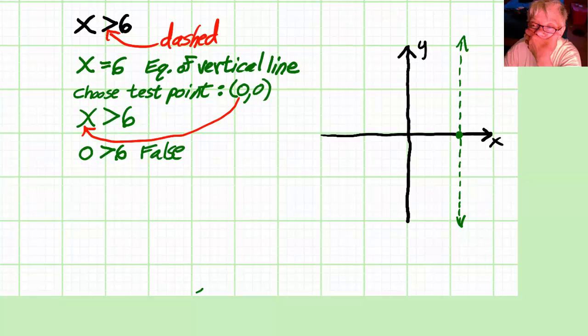Which means every point on the 0, 0 side of the line will give a false answer. As a result, we're going to shade the opposite side of the line because all of the points on the opposite side are guaranteed to give us a true answer.